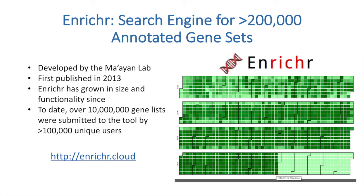Enricher was developed as an integrative web-based and mobile application for doing enrichment analysis. The current version of Enricher only supports mammalian organisms, namely human, mouse, and rat, limiting accessibility for investigators that study other model organisms.